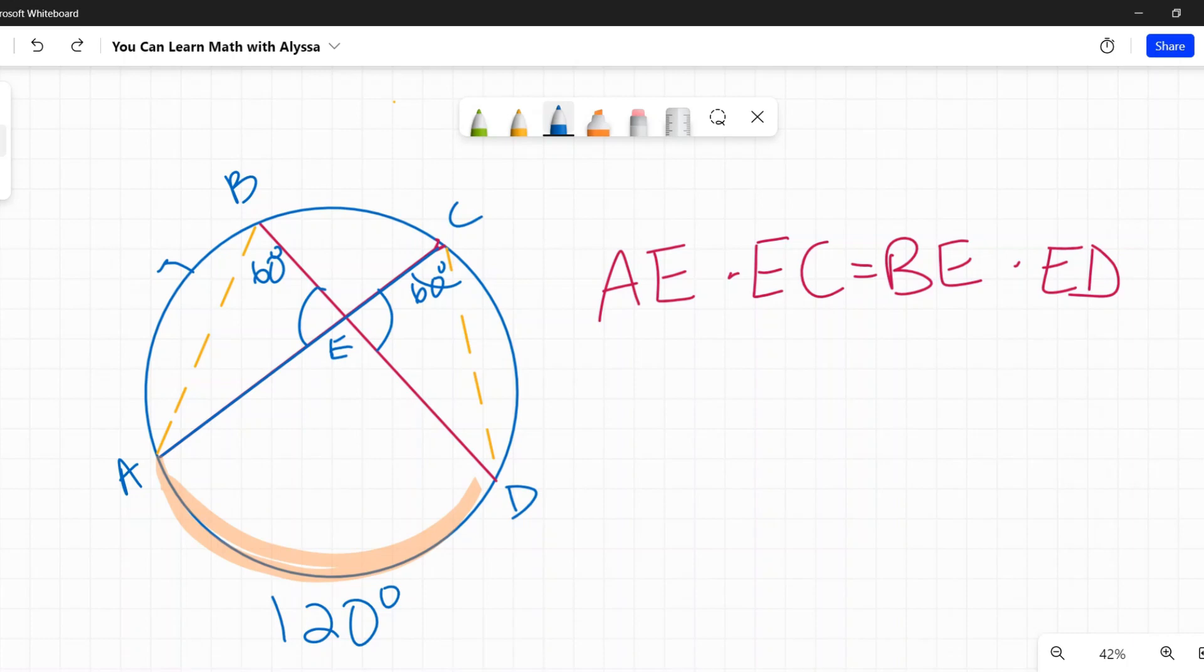So it doesn't matter that I don't know what the measure of those are. I know they are vertical, opposite angles, so they are congruent as well. Now I've got two angles that are congruent in these triangles, they are similar.